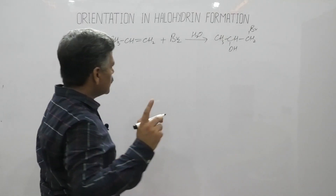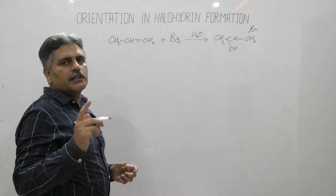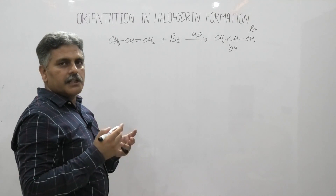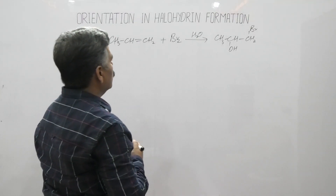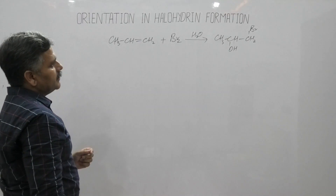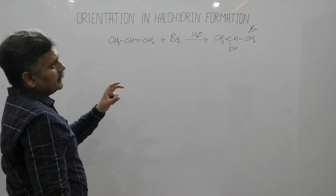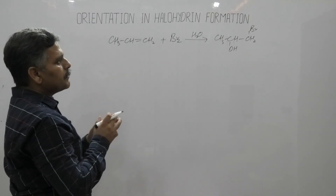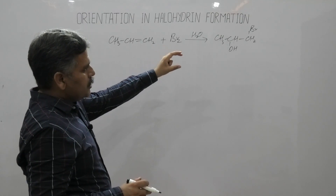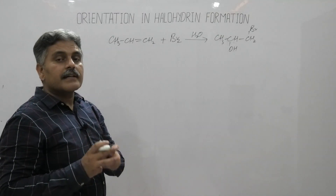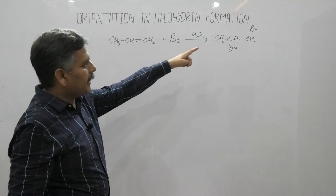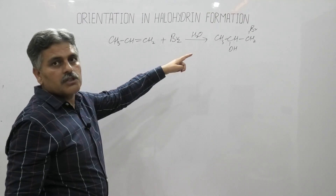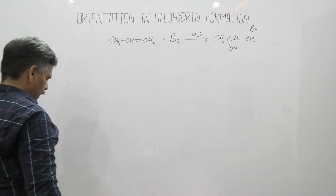I have discussed the detailed mechanism of addition at a carbon-carbon double bond when reagents are unsymmetrical and alkenes are unsymmetrical, following Markovnikov's rule. When we observe the structure of the intermediate formed in this reaction, we can easily predict the position of attachment of bromine and OH — bromine at the less substituted carbon and hydroxyl at the more substituted carbon.